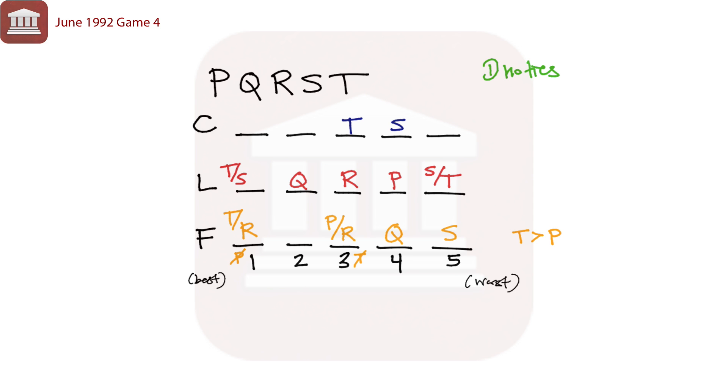The fifth condition tells us that Riverdale receives a better ranking in climate than in friendliness. Alright, so our fifth condition here is telling us that Riverdale in climate is going to rank higher than Riverdale in friendliness. So what that tells us is that in friendliness, we cannot have Riverdale appear first. So since we can't have Riverdale appear first in friendliness, and our only options before that were Tidetown and Riverdale, only Tidetown can appear first in friendliness.